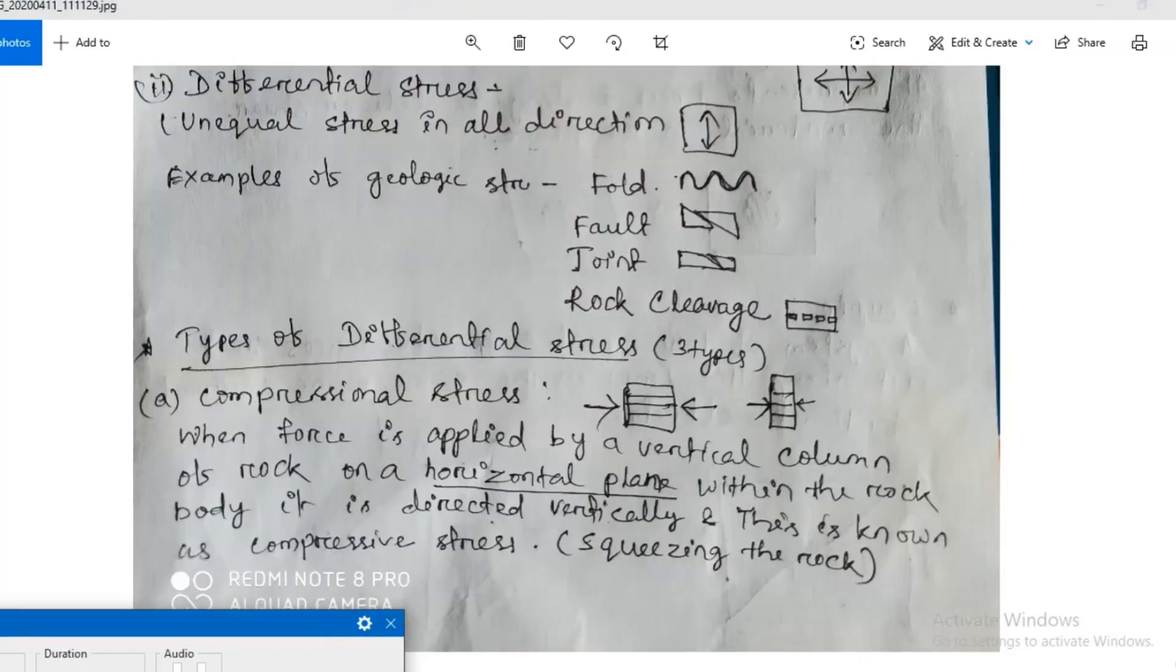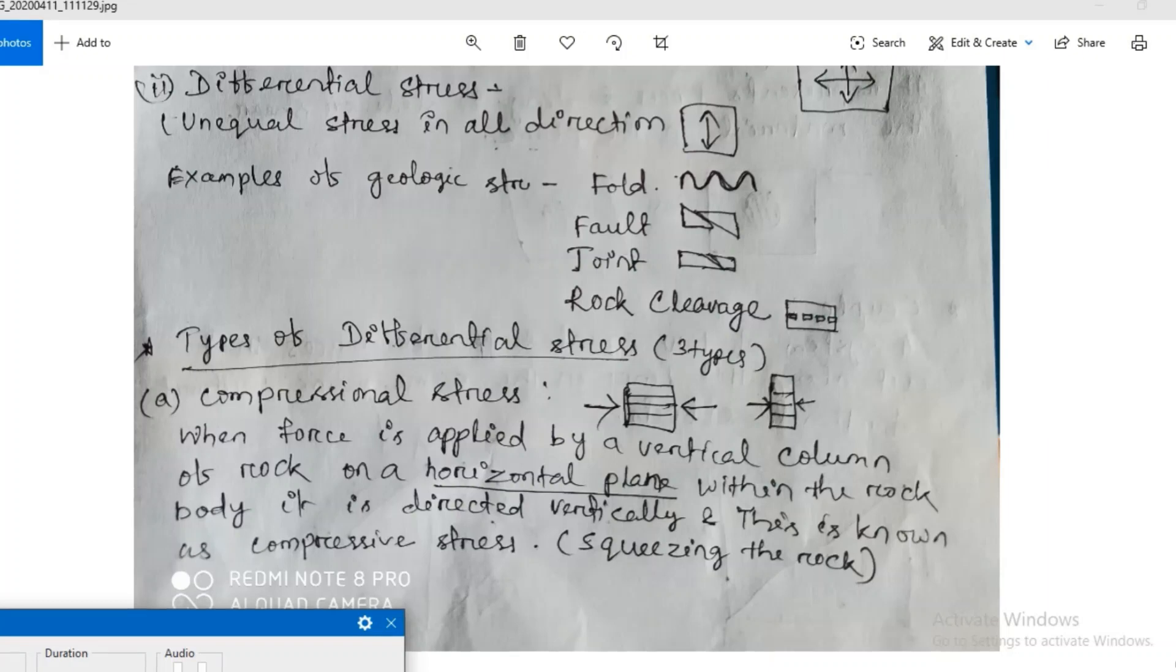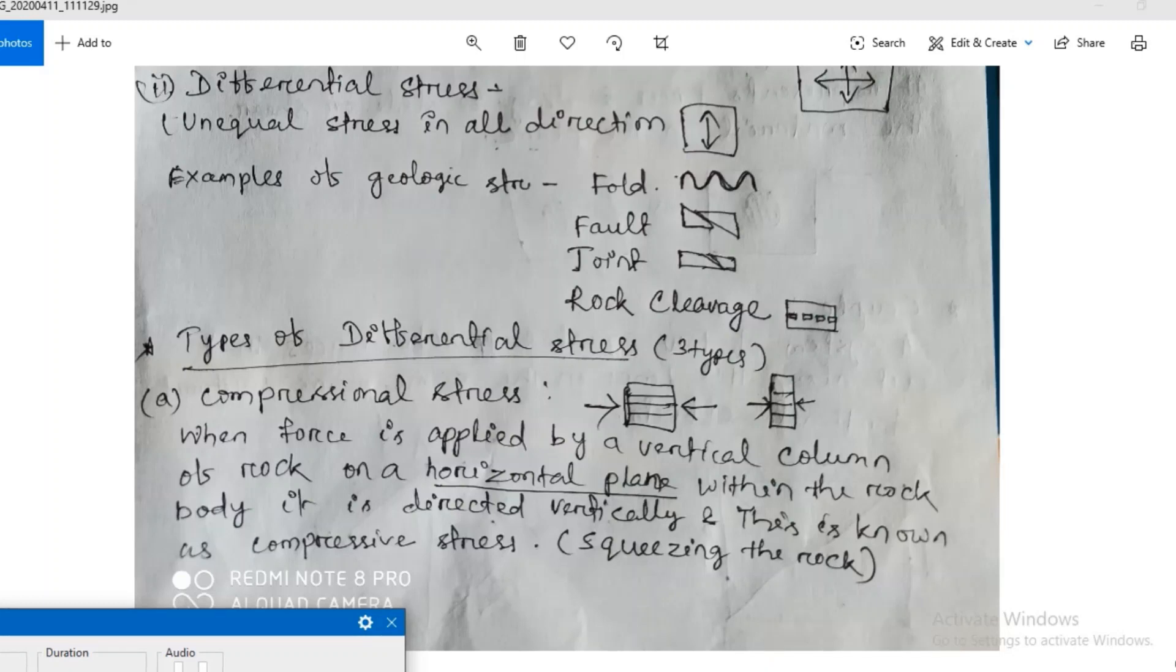Second one is differential stress. Differential stress is unequal stress in all directions. That is, changes in one direction that is not same in other directions. We are more concerned with differential stress because due to differential stress, geological structures like fold, fault, joint, and rock cleavages are formed.